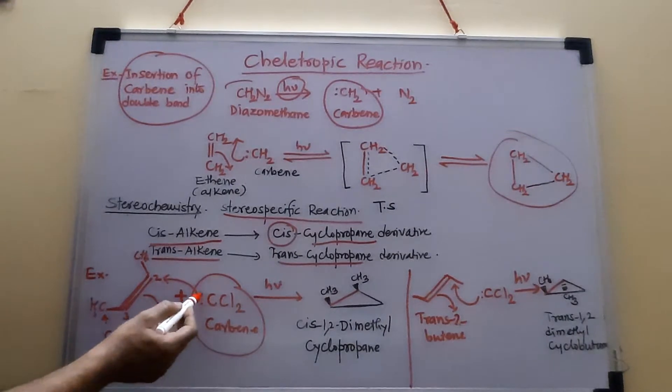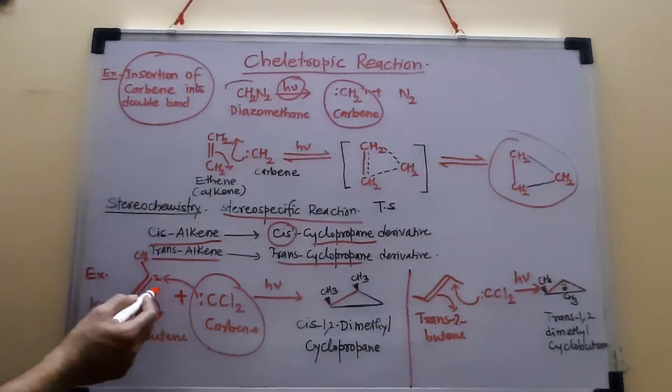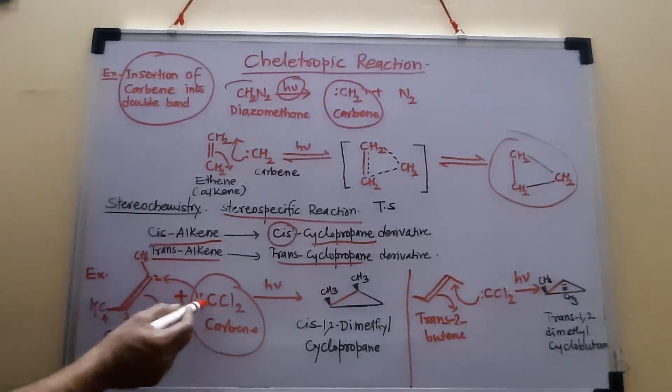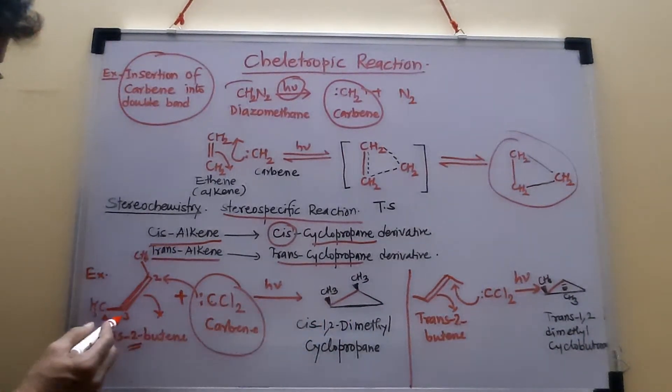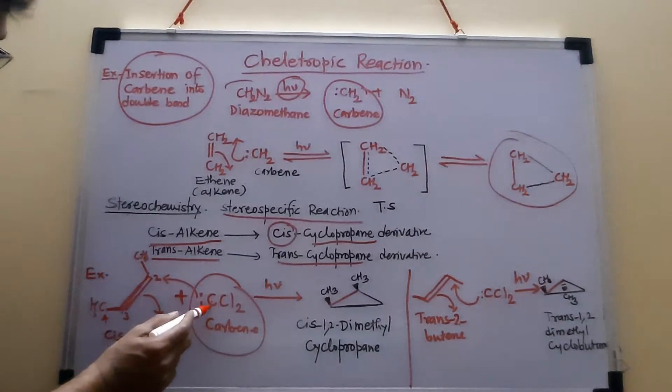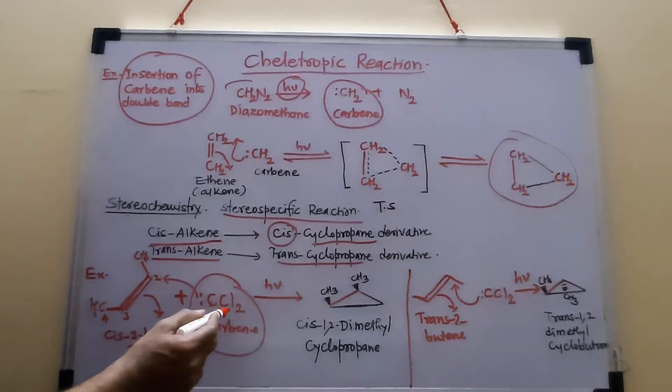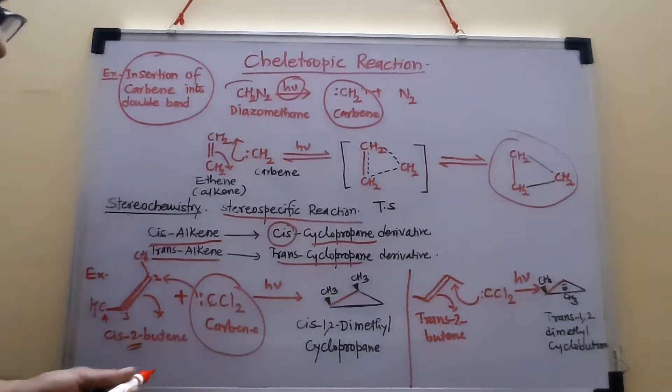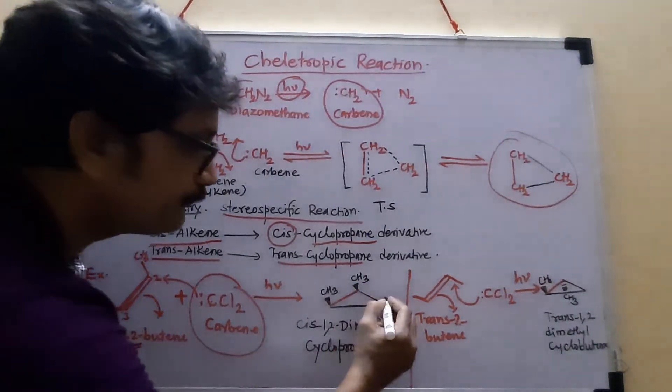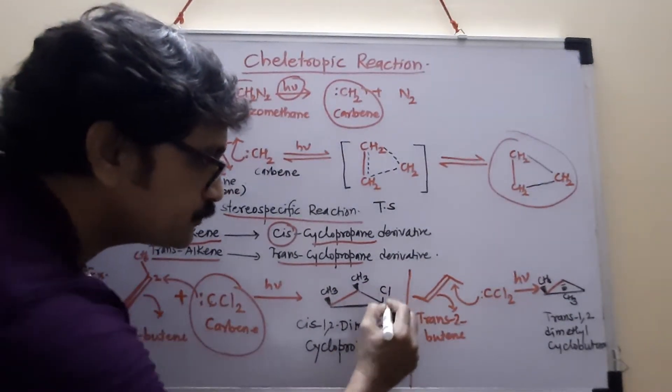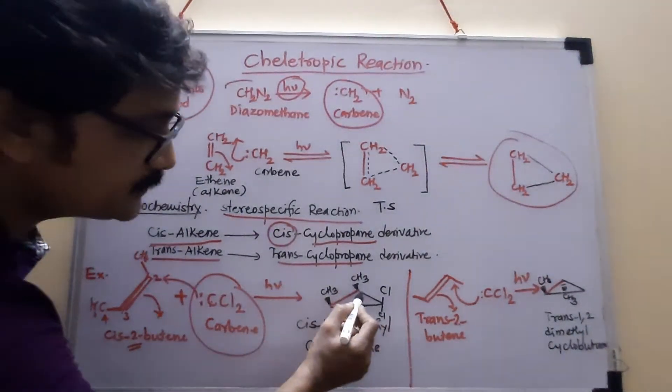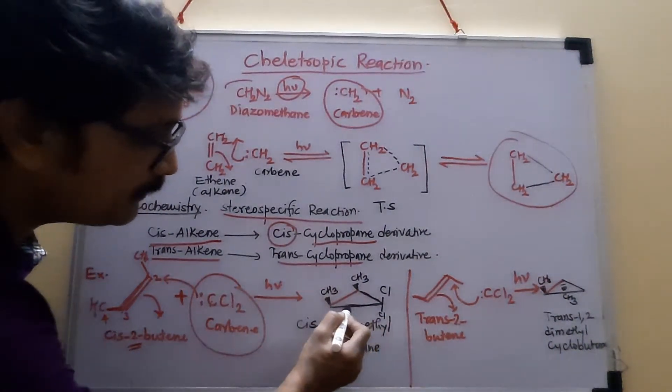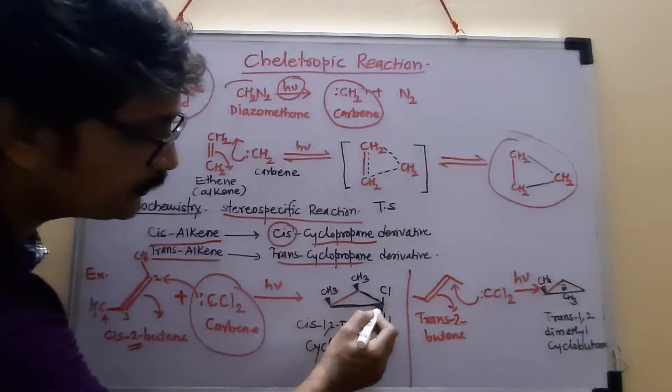This pi bond, this lone pair is going between this carbon and this carbon to form a sigma bond. And this pi bond is now shifting in between carbon number 3 and this carbon, where 2Cl present. And we get here, actually, 2Cl. So this sigma bond and these sigma bonds are actually formed on the same carbon.